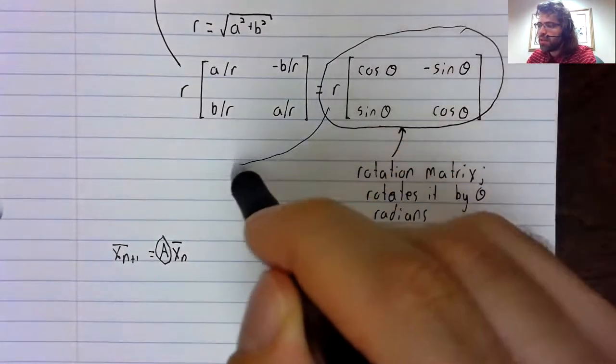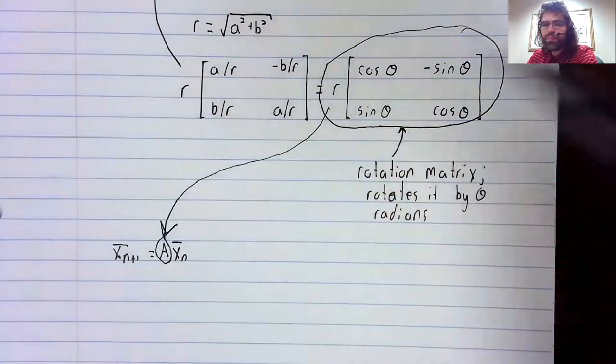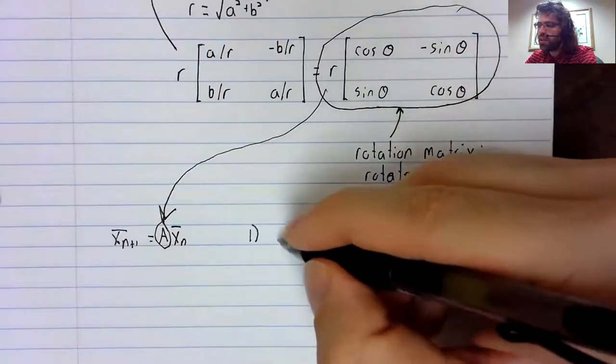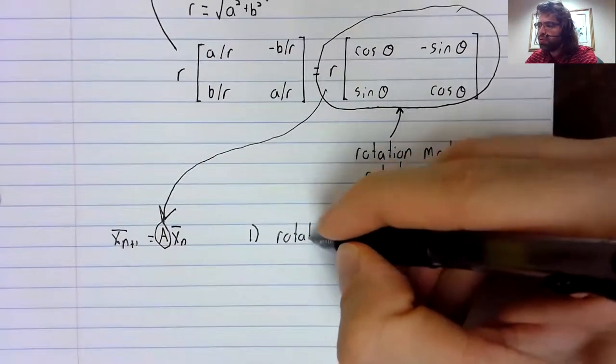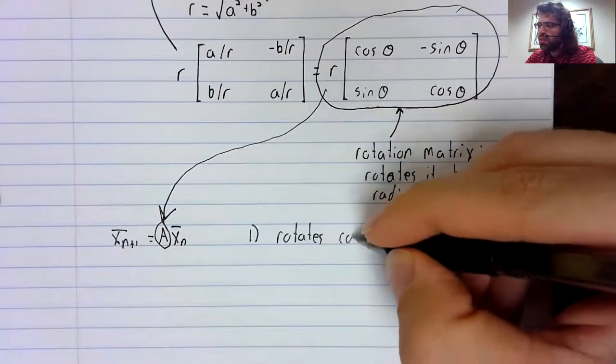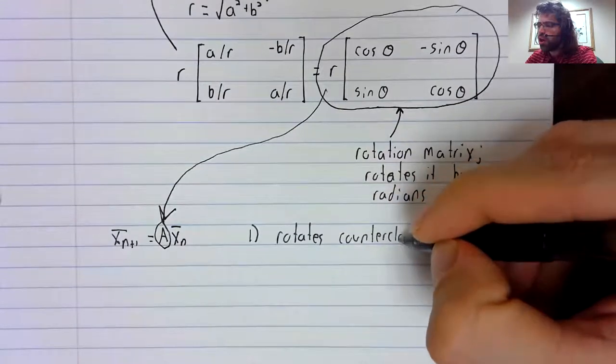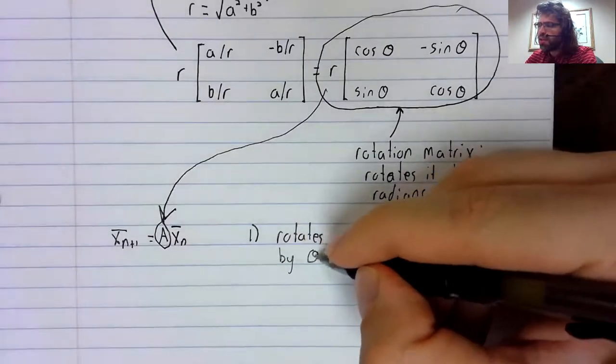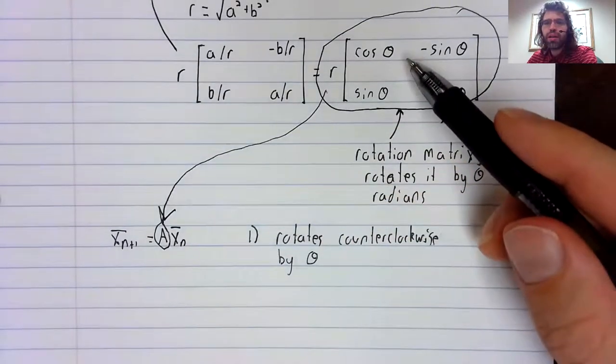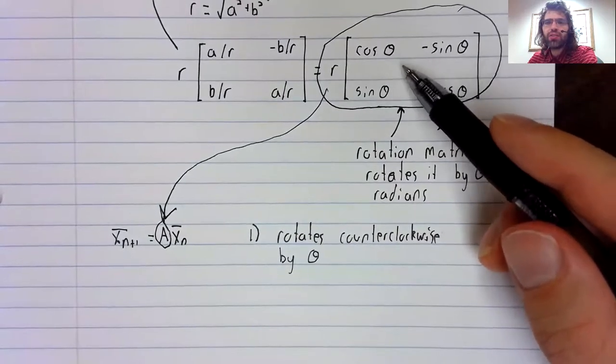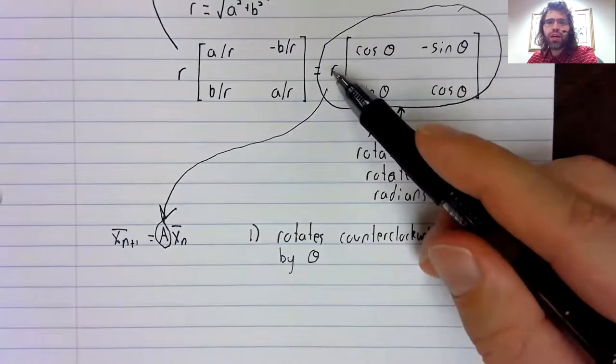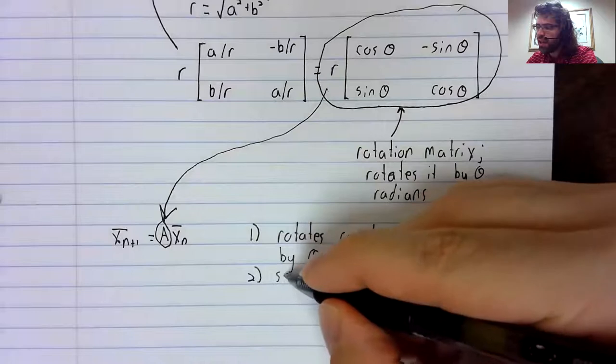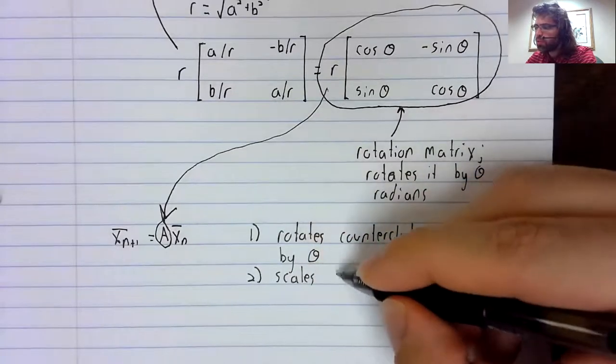Bearing in mind that A is this, well, it does two things. It rotates counterclockwise by theta—multiplying by this part of A does that—and then you're multiplying by R as well, that scalar multiplication.